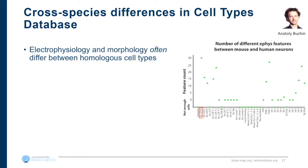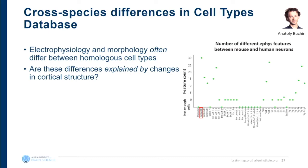To make this comparison more quantitative and extend it to different morphological and electrophysiological features, we extract features across all the data and compare at the level of homologous types between mouse and human, finding which types have statistically significant differences. The picture emerging is that differences are more the rule than the exception: for the types we do have enough data for, about half have quite a number of significantly different features. This creates a challenge of narrowing down which differences are more functionally relevant.